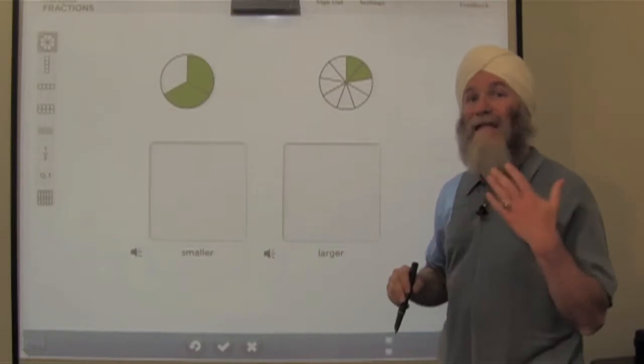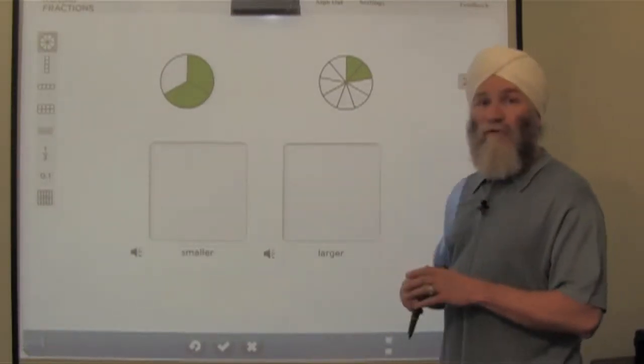Here we've divided the circle, the hour, into nine equal parts, and two of those are shaded, two-ninths.